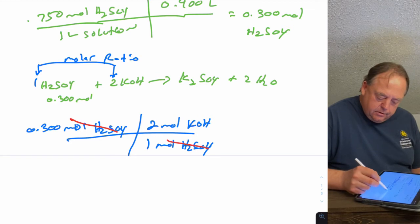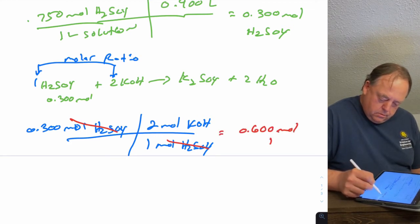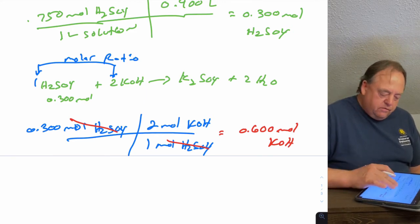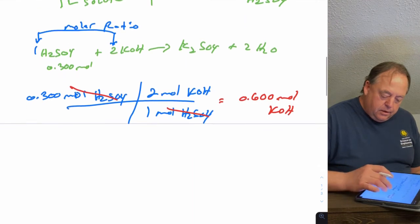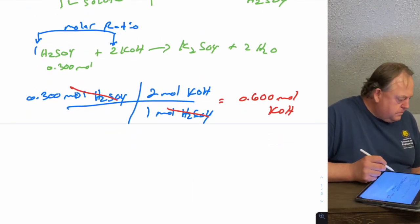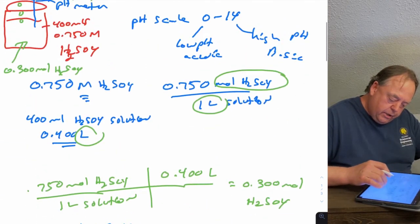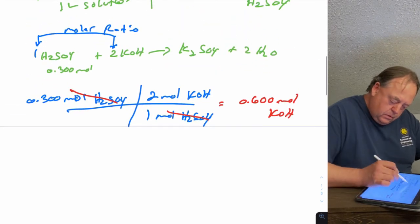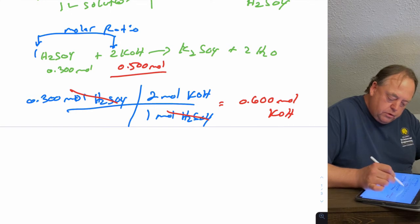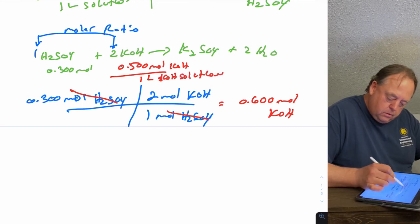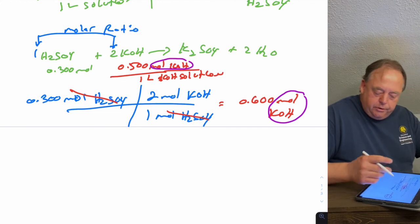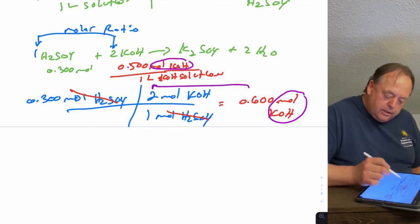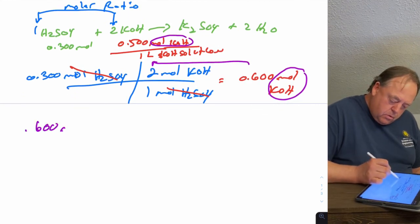So you need to add 0.6 moles of KOH from this burette. You need to drip in 0.6 moles of KOH. Well, how many liters is that? You know the molarity - your KOH is 0.5 molar, so it's 0.5 moles of KOH per liter of solution. We have two numbers now to work with - we have a mole here of KOH and a mole here of KOH - so we can use these two numbers and cancel out moles and end up in liters.